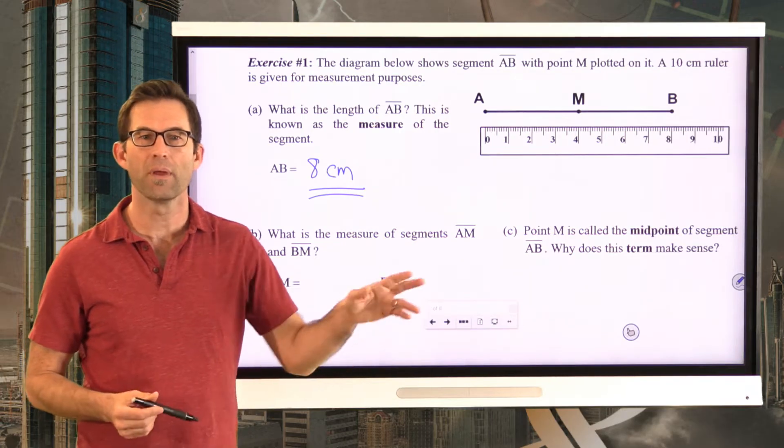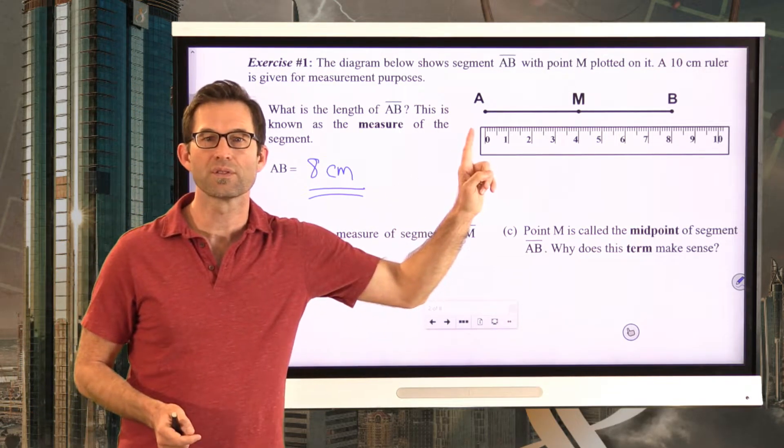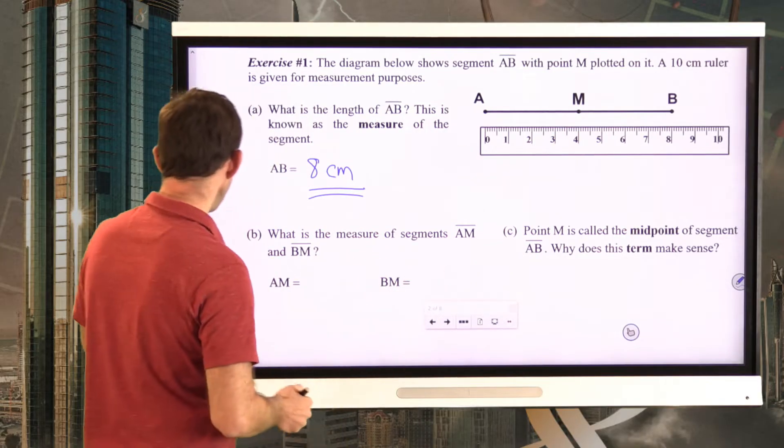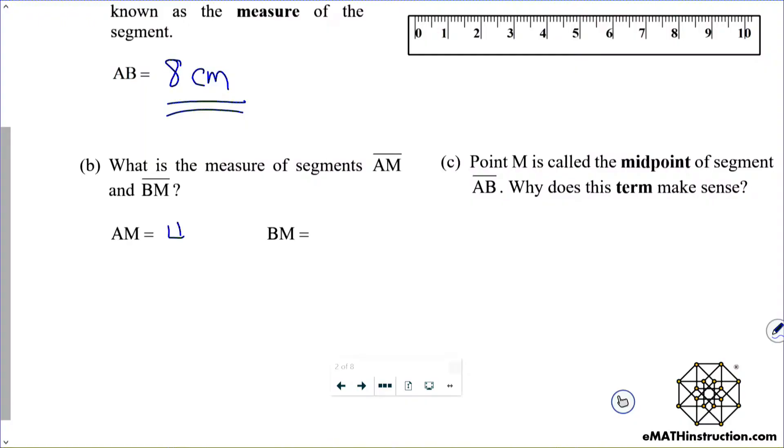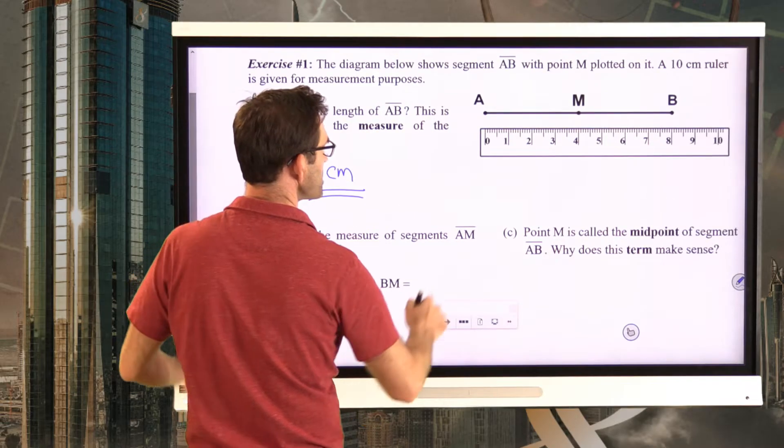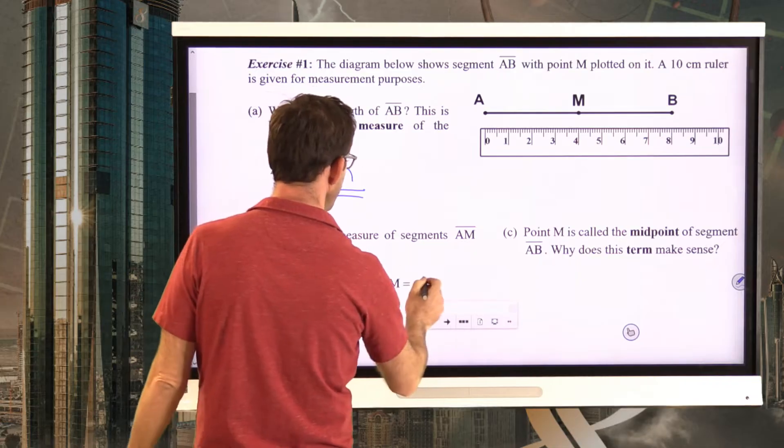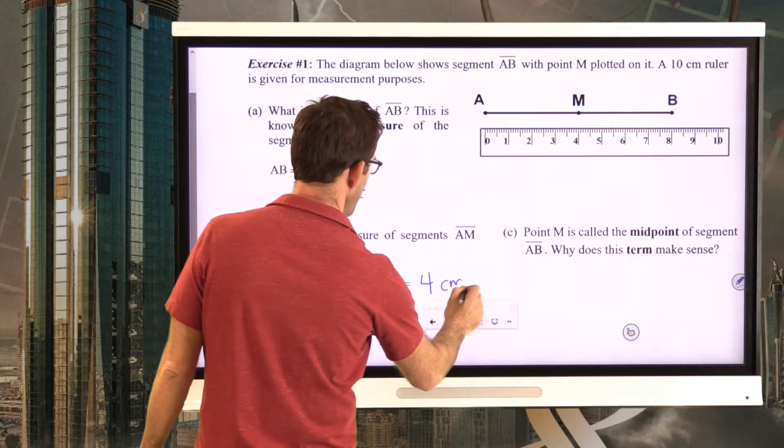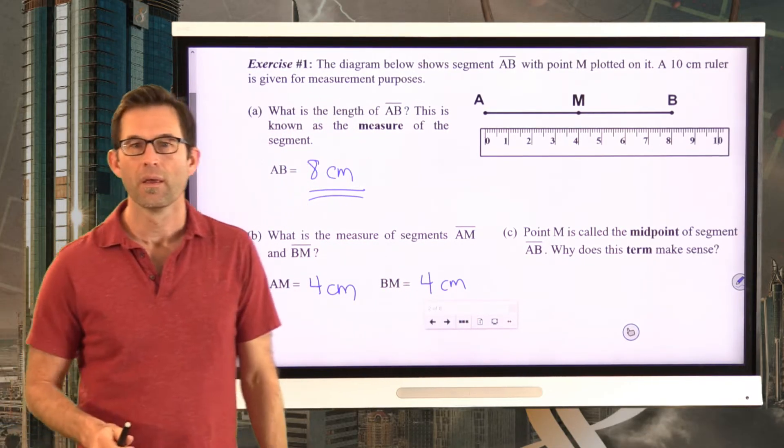Alright, AM and BM. It's very, very easy. AM starts at zero, goes to four, so clearly it's got a length of four centimeters. And likewise, BM also has a length of four centimeters. You can do that in a variety of ways, but that should be pretty obvious.